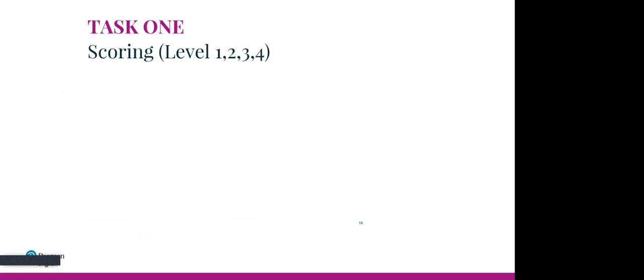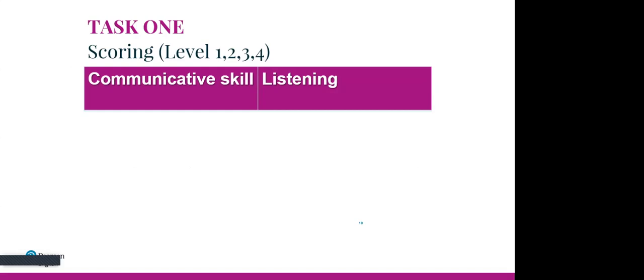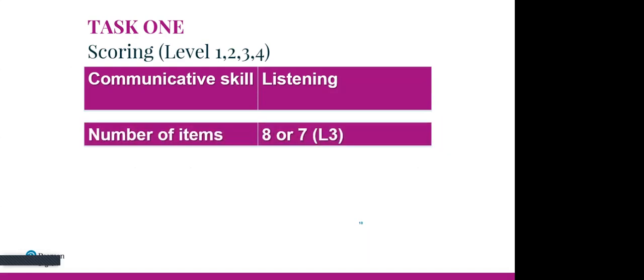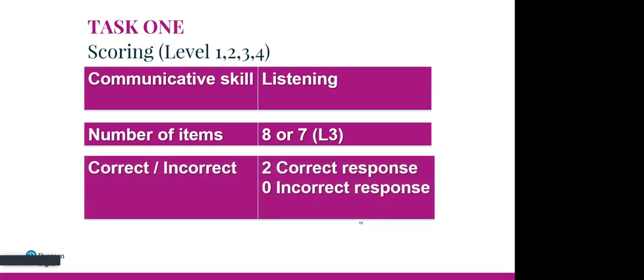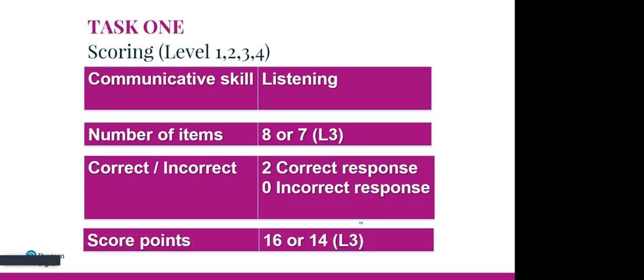The scoring system is very simple for receptive skills. All score points from this task go to listening in the skill breakdown. We have eight or seven items — level three is a little bit exceptional with only seven items; levels one, two, and four have eight items. Each item is worth two points and there is only correct or incorrect — no partial credit. So the maximum score points for task one will be 16, or 14 if this is level three.